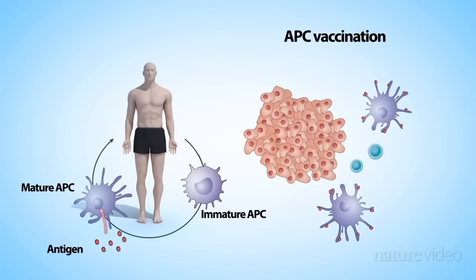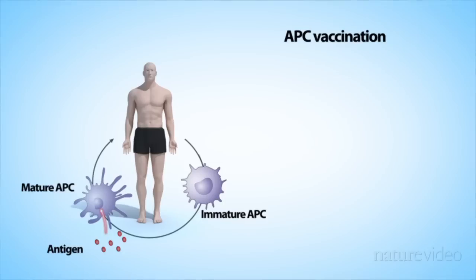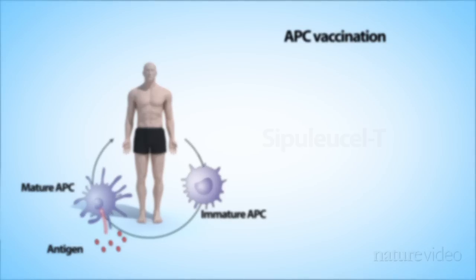The first vaccine of this type received FDA approval in 2010 for the treatment of some prostate cancers. It's known as Provenge or Sipuleucel-T. The other vaccination approaches are still experimental.